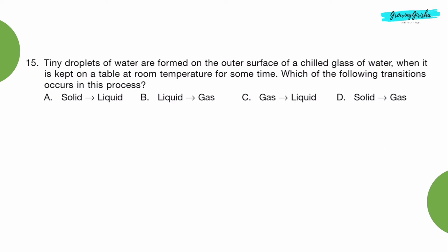Question 15: Tiny droplets of water are formed on the outer surface of a chilled glass of water when it is kept on a table at room temperature for some time. Which of the following transitions occurs in this process? Option C: Gas gets converted into liquid.